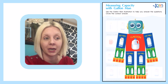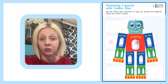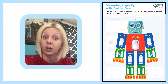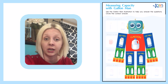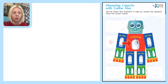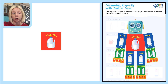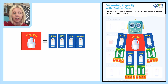So let's take a look at gallon man here. He looks like a robot, but he's also kind of a chart to help us understand how much of something is in something else. We're going to start with the biggest part of his body, which is the gallon. Four quarts are going to equal one gallon.